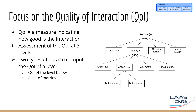Now we are going to focus on the quality of interaction (QI) — how to measure it. We define QI as a measure that indicates how good the interaction is. It is set at three levels: the interaction session level, the task level, and the action level. Each QI measure also takes into account data from the lower level. The real-time evaluation process performs computations every one second: it gets the measurements of selected metrics, then computes a QI value for the ongoing action and for the task. QI values are between minus one (representing poor quality) and one (representing high quality).